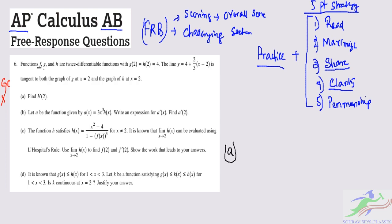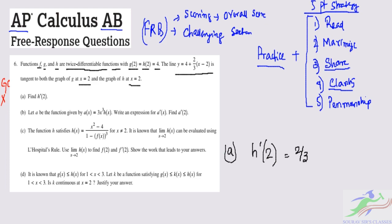It is given that functions F, G, and H are twice differentiable functions with G(2) = H(2) = 4, and the line y = 4 + (2/3)(x − 2) is tangent to both the graph of G at x = 2 and the graph of H at x = 2. We have to find H'(2). Since the line is tangent to H at x = 2, H'(2) is simply 2/3.